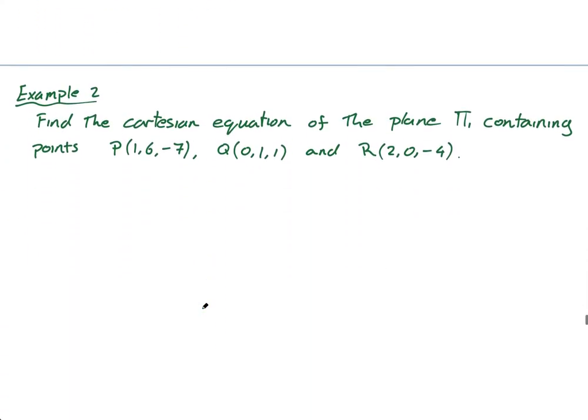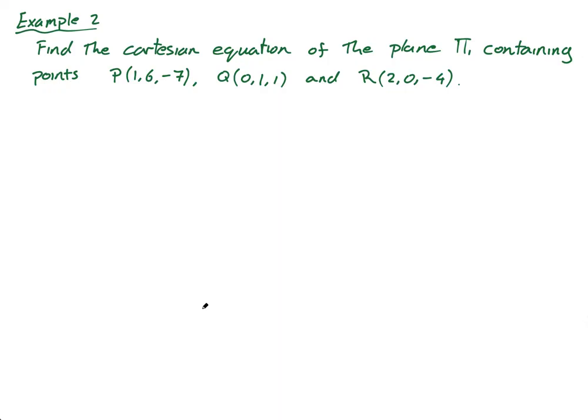Okay, great. Next example. Find the Cartesian equation of the plane, pi, or pi 1. So I just wanted to introduce this to you. This is a capital pi. So often we use the letter capital pi to define a plane. So anyway, capital pi containing points P, Q, and R. So, again, let's be clear what's going on here. This is some plane. Now, P is on the plane, Q is on the plane, and R is on the plane. P, Q, R.